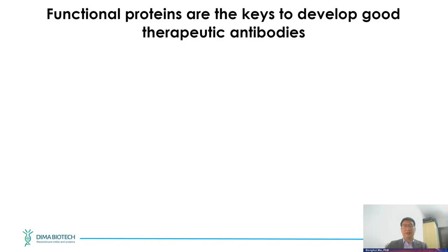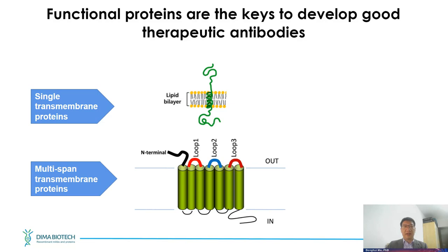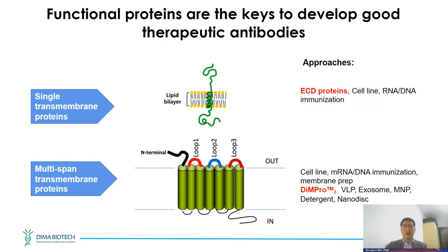For functional proteins used in therapeutic lead antibody discovery, more than 90% of antibody drug targets are transmembrane proteins. Based on the complexity of their transmembrane domains, they can be divided into two groups: single transmembrane proteins and multi-transmembrane proteins. For single transmembrane proteins, well-established technologies use the extracellular domain fused with His or Fc, expressed in mammalian cells to mimic native structure — and a number of FDA-approved drugs have been successfully developed by this approach.